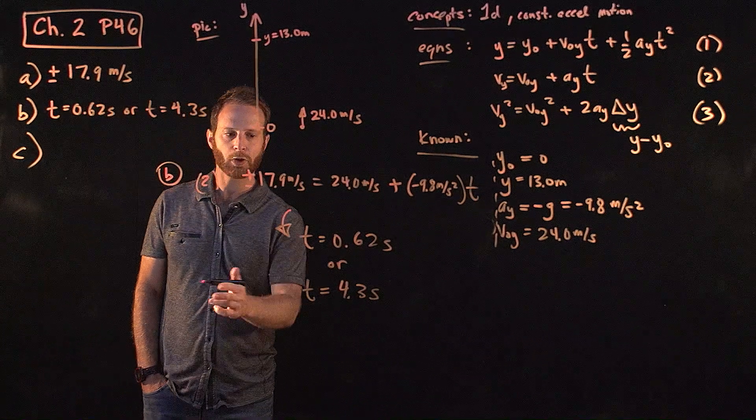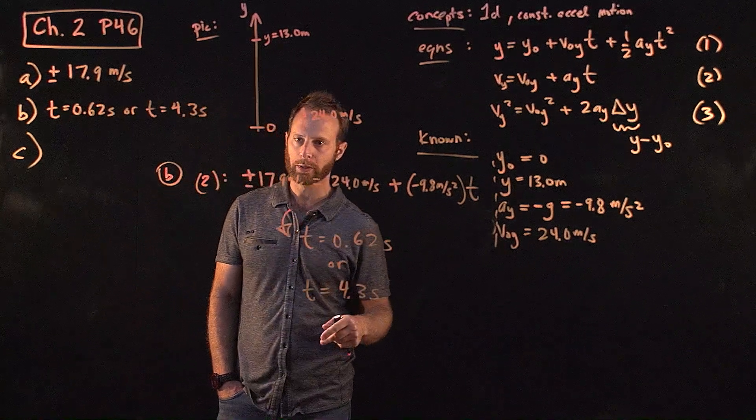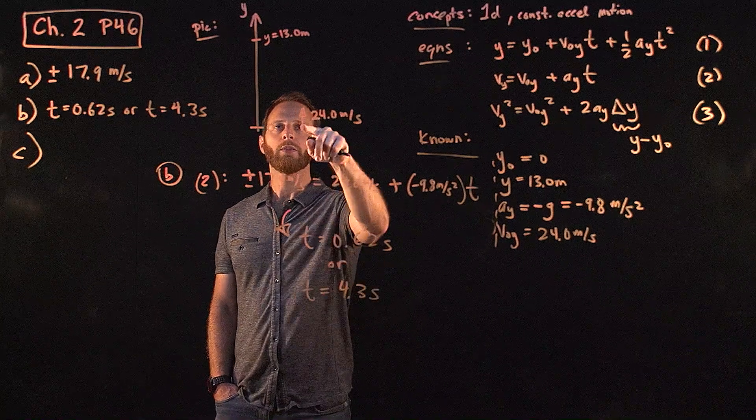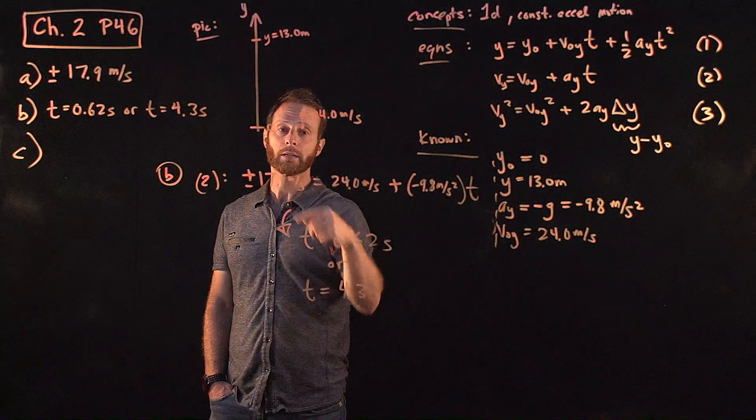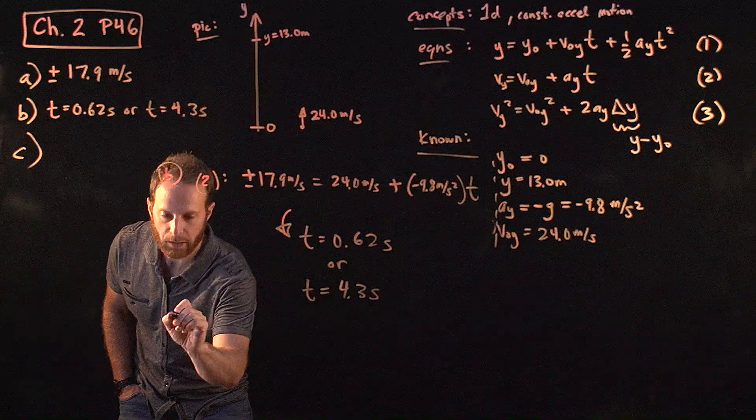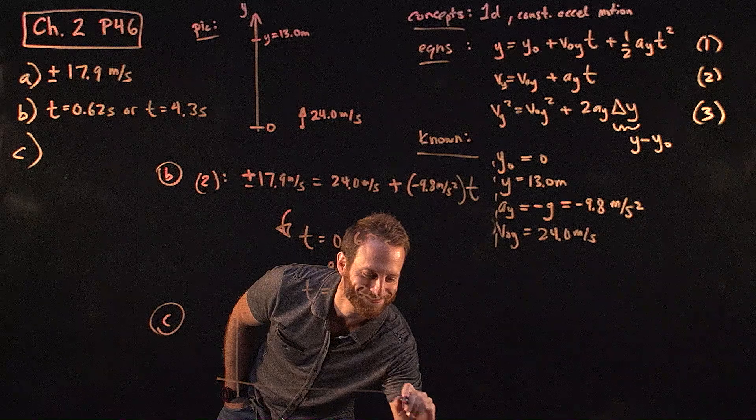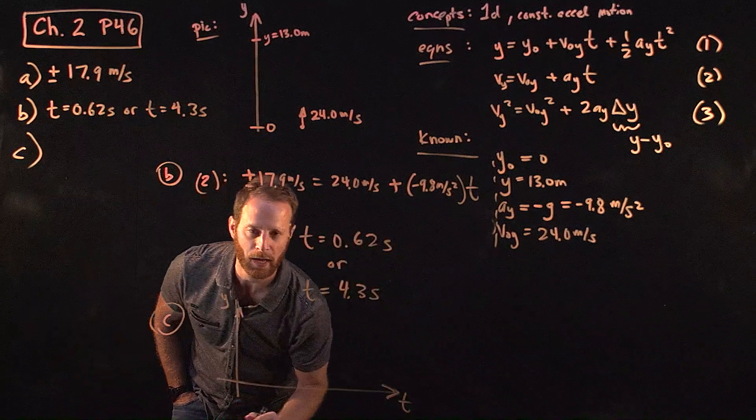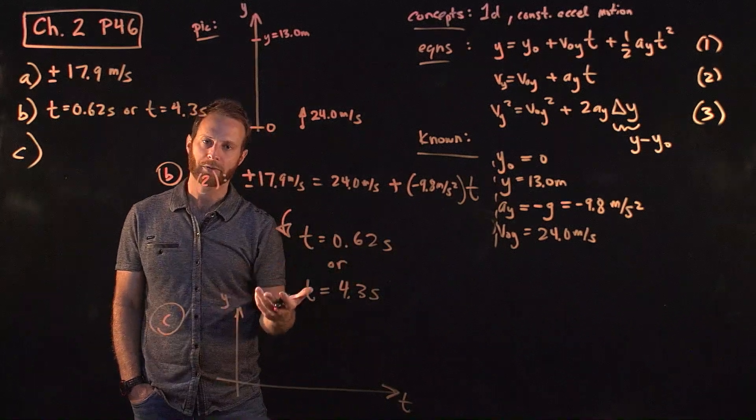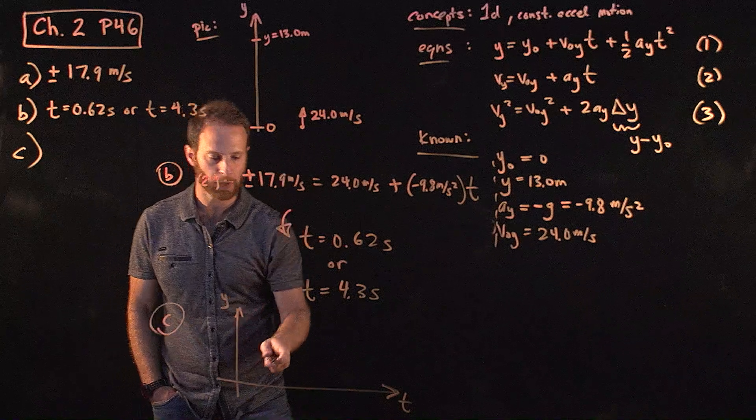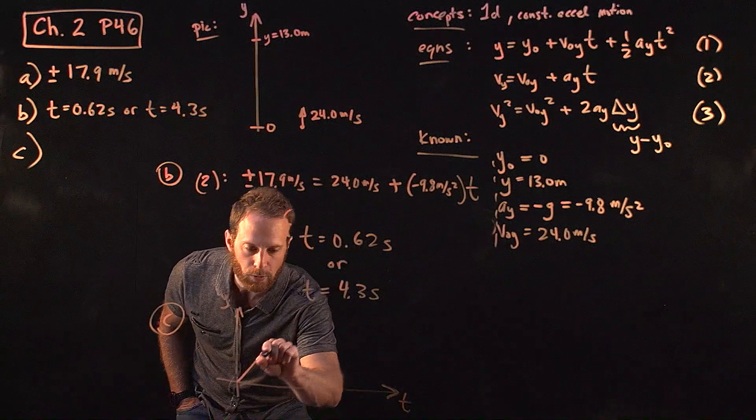Finally, for part C, let's just notice that the reason why there are two choices here is because, actually, the stone will pass this point, this height, twice. It's best to illustrate this by making a graph of y as a function of time. We know that the path has a parabolic shape. Even if it's going straight up in time, the path kind of looks like this.